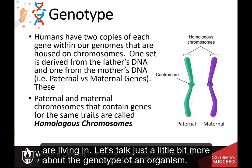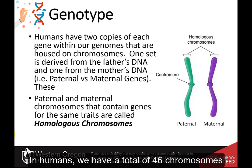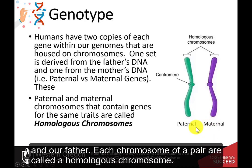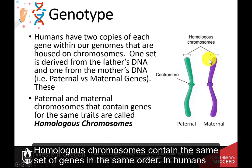Let's talk a little bit more about the genotype of an organism. In humans, we have a total of 46 chromosomes, or 23 pairs. These pairs of chromosomes come from our mother and our father. Each chromosome of a pair are called the homologous chromosome. Homologous chromosomes contain the same set of genes, in the same order.